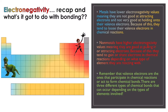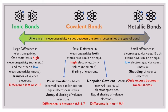Valence electrons are the ones that participate in chemical reactions — the ones that are acting to form those chemical bonds. There are three types of chemical bonds that we are going to learn about that can occur depending on the type of elements involved. The three main bond types are ionic bonds, covalent bonds, and metallic bonds.